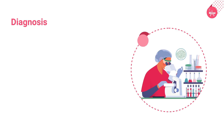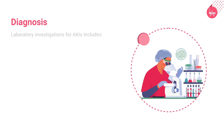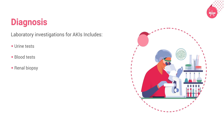Identifying the cause of AKI is the foremost step toward treating the patient. Careful history taking and physical examination combined with appropriate laboratory investigations help in narrowing down the cause of AKI. Lab investigations include urine tests, blood tests, and renal biopsy. Let us now discuss these investigations individually.